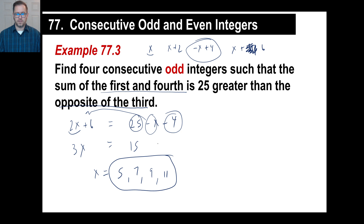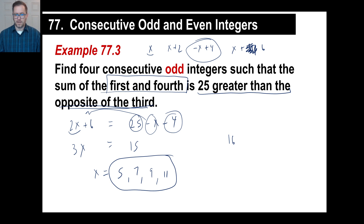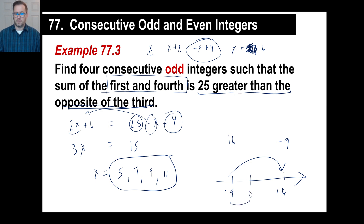Just for the heck of it, let's verify. The sum of the first and the fourth: 5 plus 11 is 16. Is that 25 greater than the opposite of the third? The opposite of the third (9) is negative 9. On the number line, from negative 9 to 16: go 9 to reach 0, then 16 more — that's 25. We're in good shape because 16 is indeed 25 greater than negative 9.